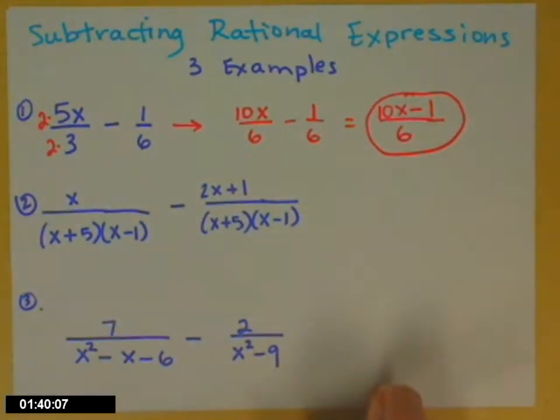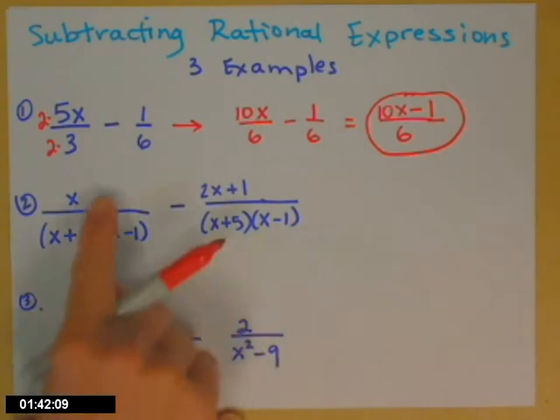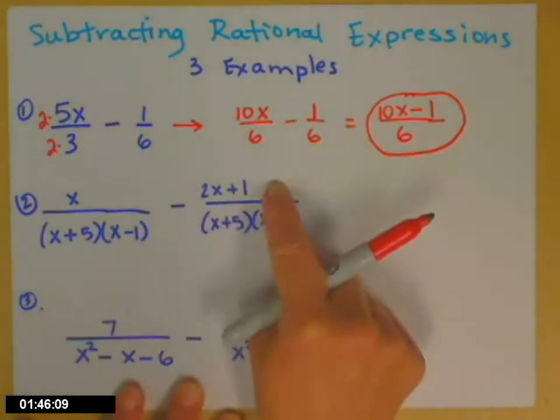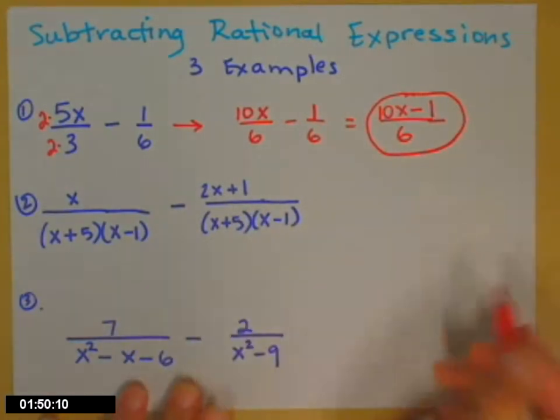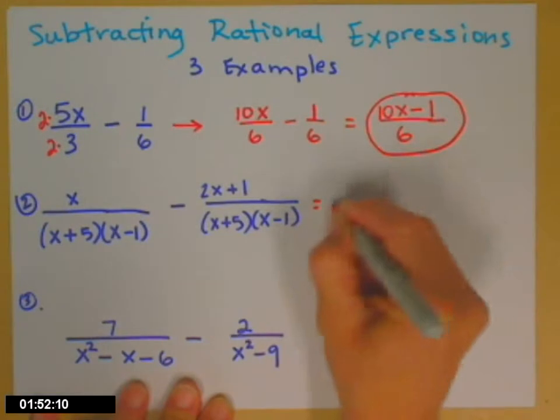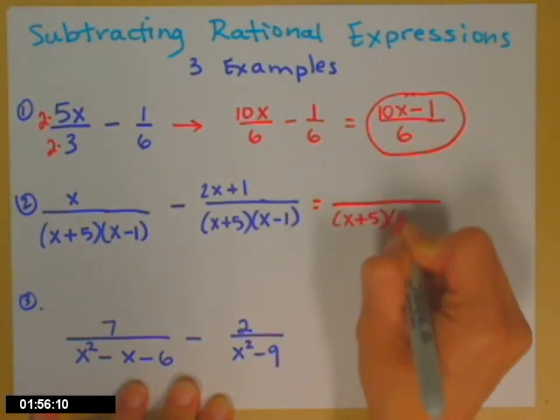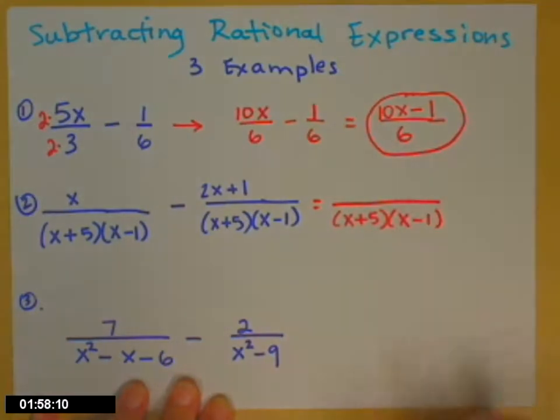Let's look at the second example. Here I have x over x plus 5 times x minus 1 minus 2x plus 1 over x plus 5 times x minus 1. Hey, I've already got the same denominator. That's great. So that's going to be the denominator of my answer, unless it might reduce at the end, and we'll check that.